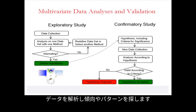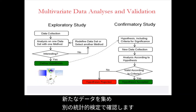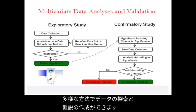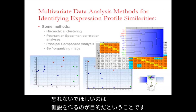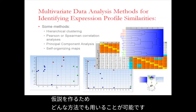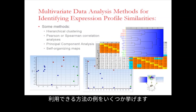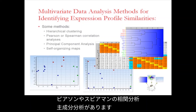An exploratory study is the center of our activities when we perform expression profiling. We analyze the data looking for trends and patterns. What we find we can later use to define a specific hypothesis, collect new data, and confirm it in separate statistical tests. Many different methods are available to explore the data and generate hypotheses. Some examples include hierarchical clustering, Pearson and Spearman correlation analysis, and principal component analysis.